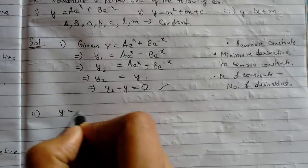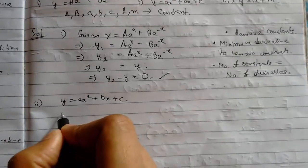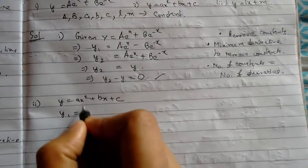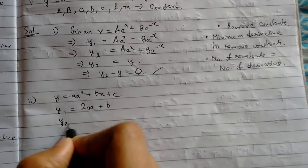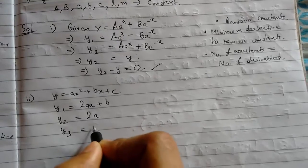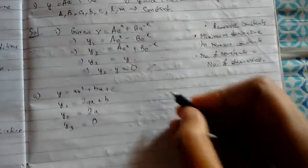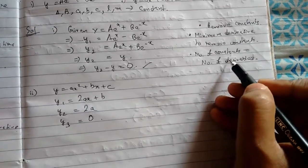Now we will see the second example, and accordingly we will follow the steps. First we differentiate it: this will be 2ax + b. Differentiate again: 2a. Now y₃: this will be 0. We can see that we have removed the constants.